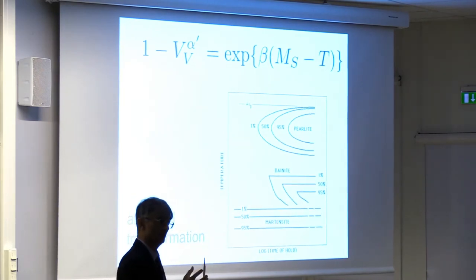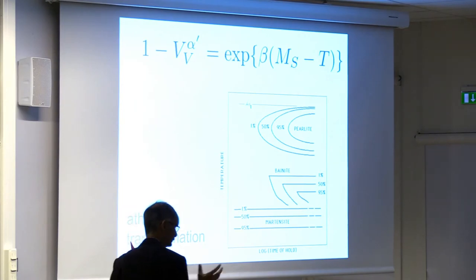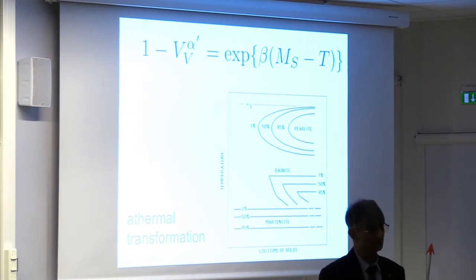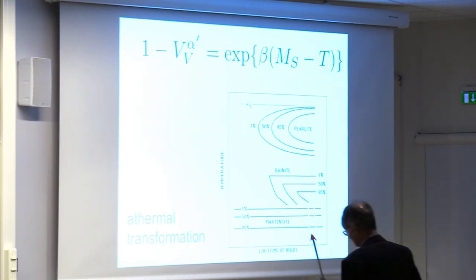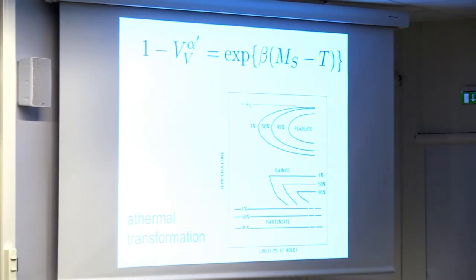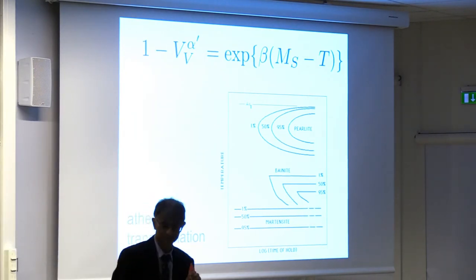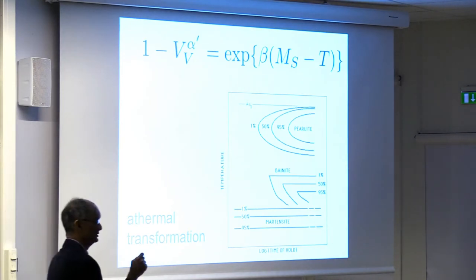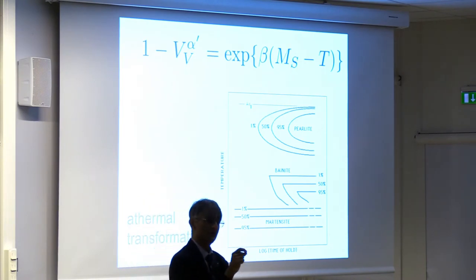It is a first-order transformation in thermodynamics, meaning it involves nucleation and growth, and therefore time must be present — it's simply very, very fast for us to measure. We don't just have austenite to body-centered cubic or body-centered tetragonal martensite; you can also get hexagonal close-packed martensite. This is the only example I know in all of the literature where nucleation has been directly observed. Classical nucleation involves fluctuations of atomic arrangements, but martensitic nucleation happens by the dissociation of dislocations.